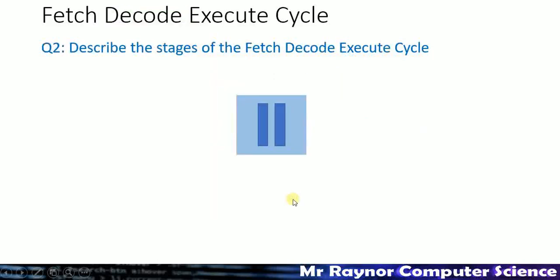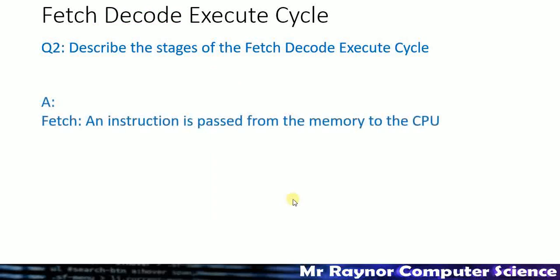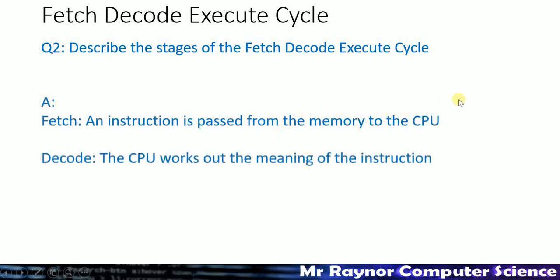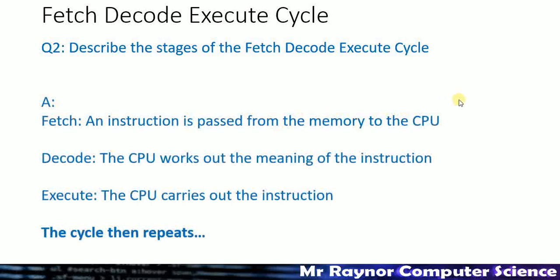Question 2: can you describe the stages of the fetch-decode-execute cycle? The fetch part basically means an instruction is passed from the memory to the CPU. Decode: the CPU works out the meaning of the instruction. Execute: the CPU carries out the instruction. And it's important to remember that this is a cycle — it repeats, it doesn't just happen once, it's constantly looping around.